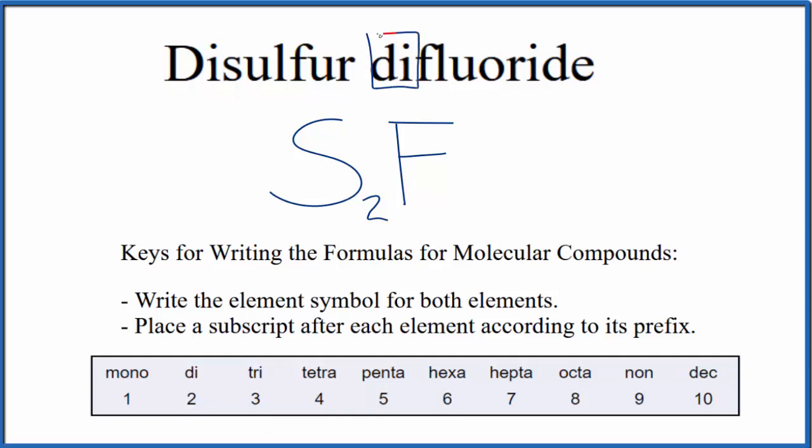And again, fluoride, we have two. So we'll have two of these fluoride ions here. That makes this the formula for disulfur-difluoride, S2F2.